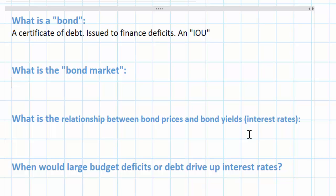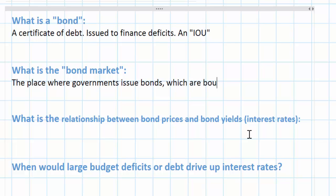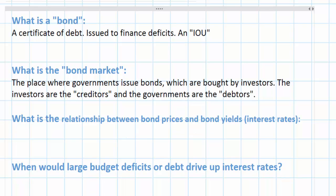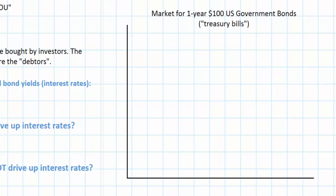So what is the bond market? We should define who the demanders and suppliers of government bonds are. The bond market can be defined as the place where governments issue bonds which are bought by investors. The investors — the demanders of government bonds — are the creditors, and the governments are the debtors. To keep things simple, I'm examining the market for one-year $100 US government bonds, which in the United States we refer to as treasury bills or treasury notes.